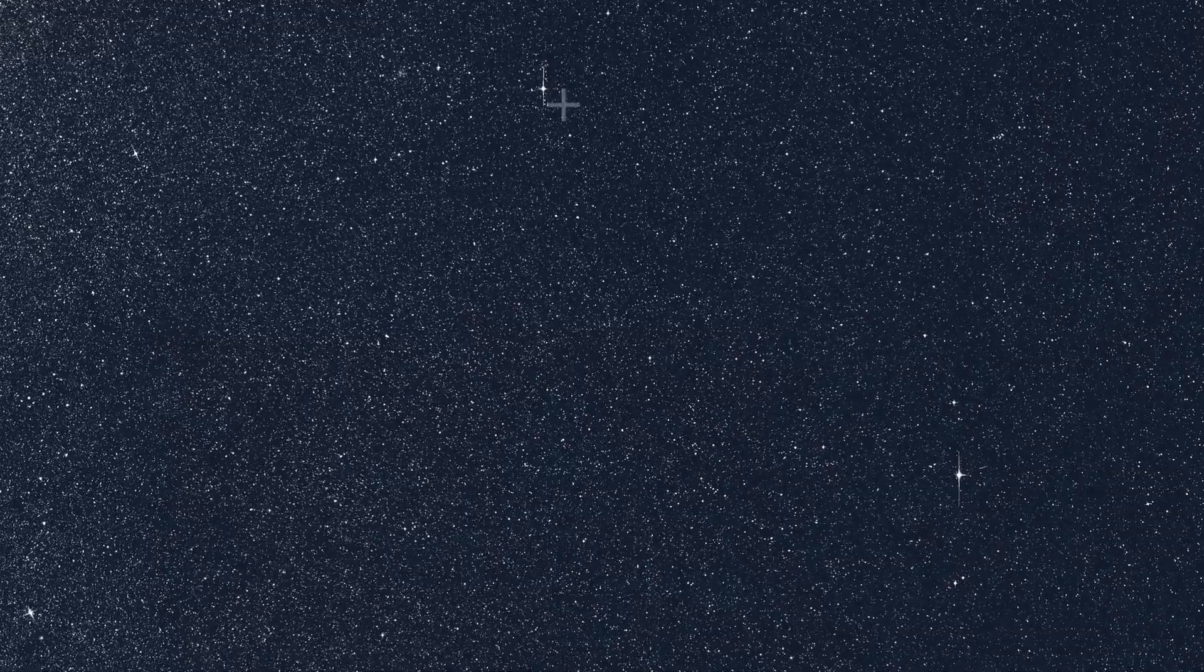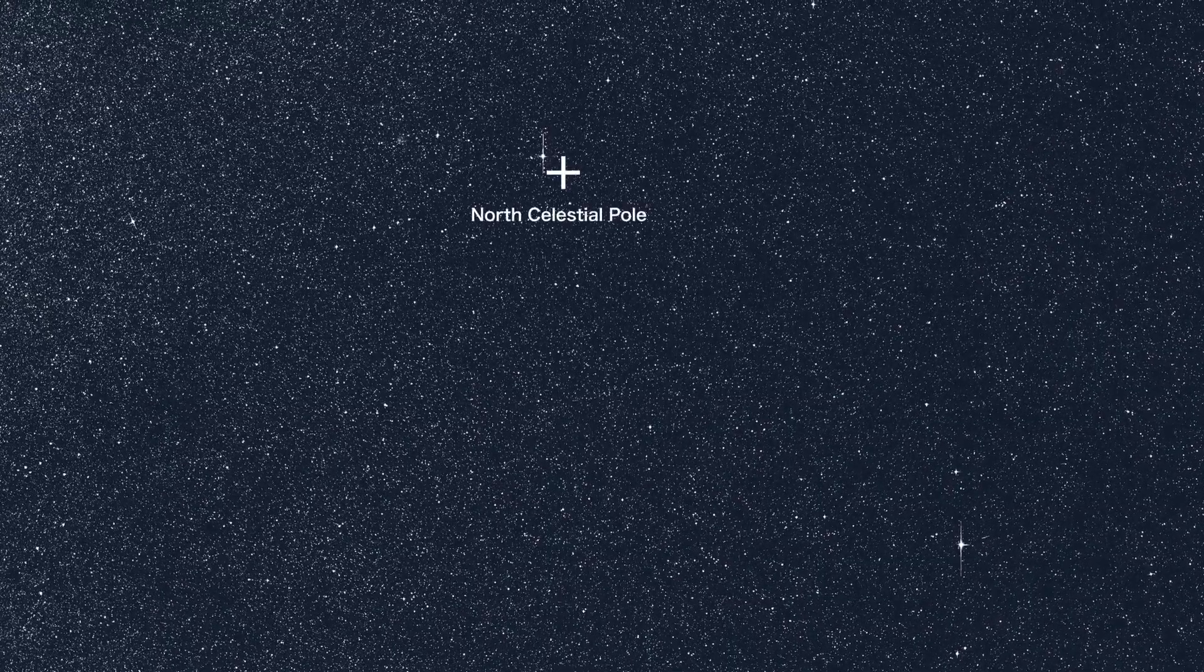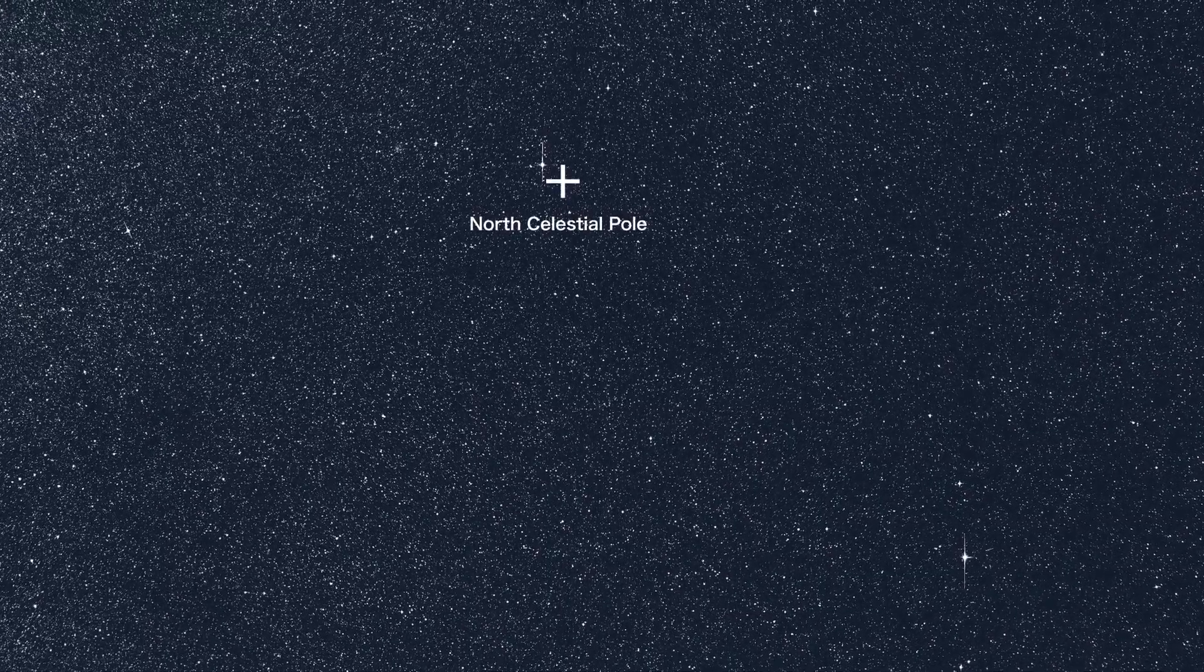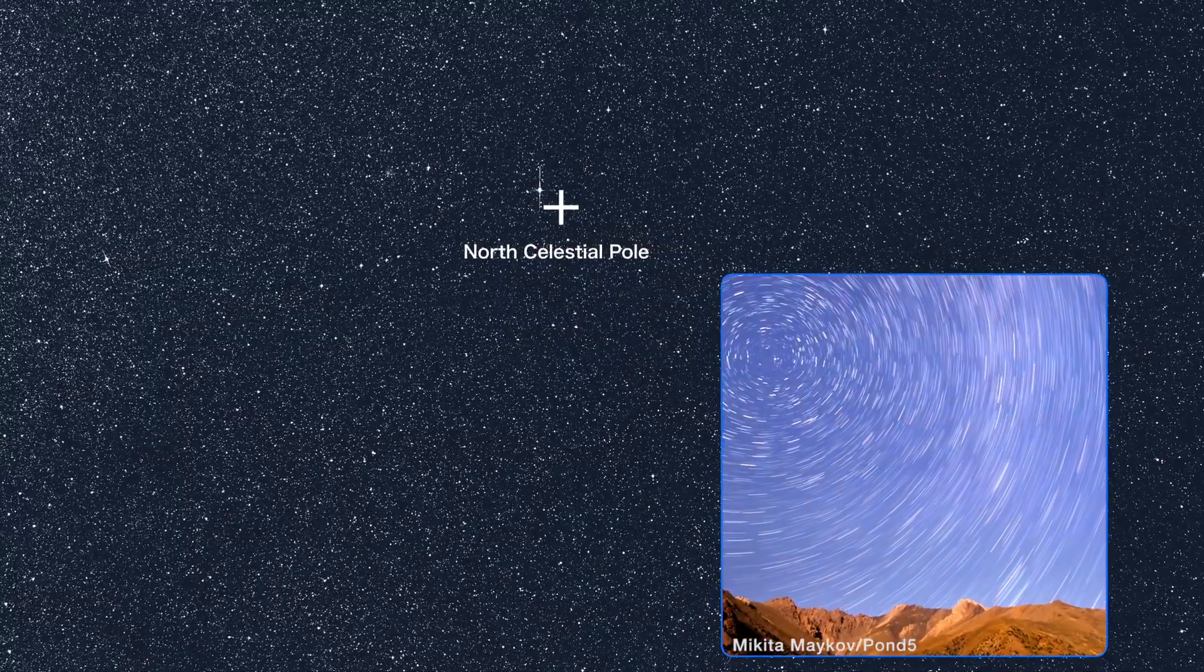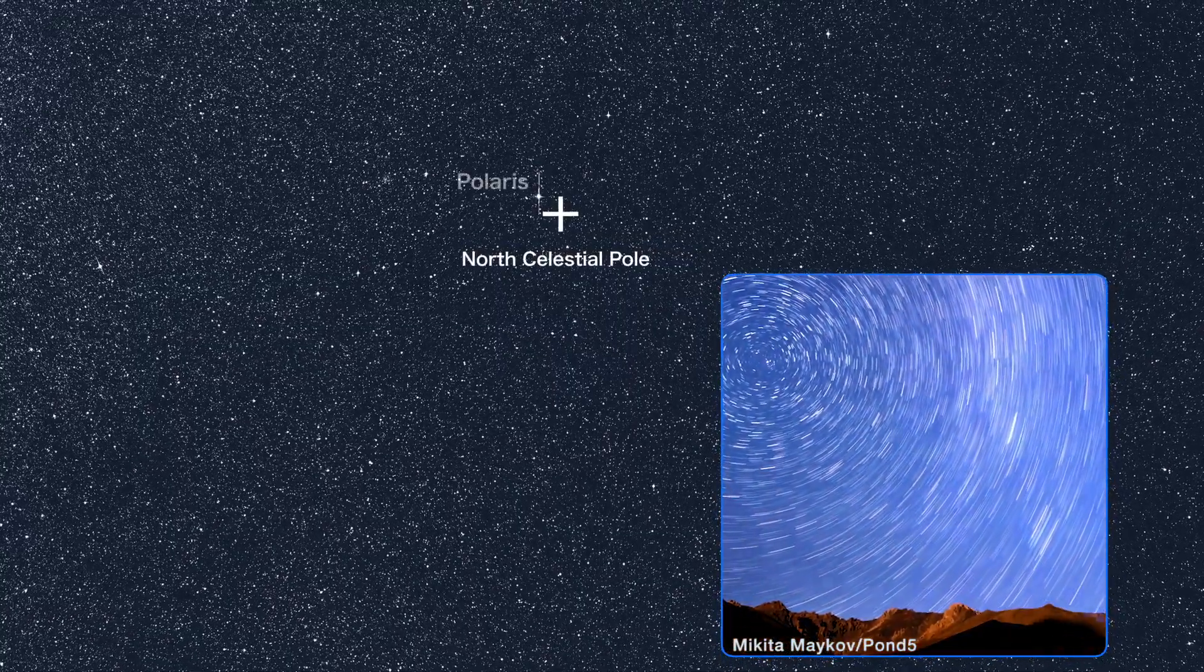More familiar to sky watchers is the north celestial pole. This is where the north end of our planet's spin axis intersects the sky. The whole starry vault appears to revolve around this point, conveniently marked by the nearby star Polaris.